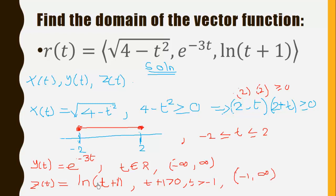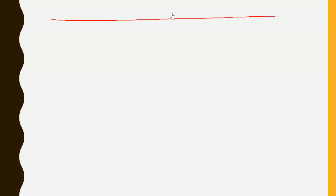Now we have the domains of all three functions that constitute R(t). We can represent them on a number line: y(t) spans negative infinity to positive infinity; x(t) spans the closed interval negative 2 to positive 2; and z(t) spans the open interval from negative 1 to positive infinity.